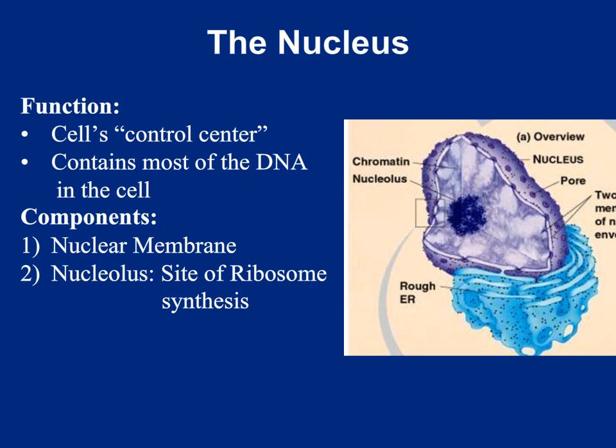One of the most conspicuous organelles inside the cell is the nucleus — basically the control center of the cell. It contains all of the DNA, which is the genetic blueprint allowing cells to reproduce and manufacture proteins and other substances. The nucleus is divided into two regions: a nuclear membrane, which regulates passage of substances into and out of the nucleus, and inside we find the nucleolus — a dark-staining region where ribosomes are synthesized.